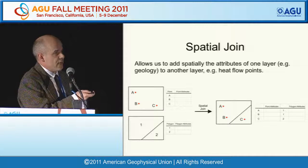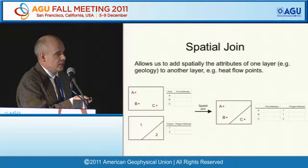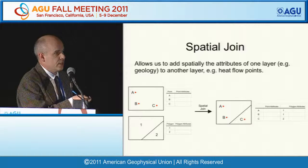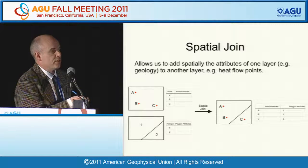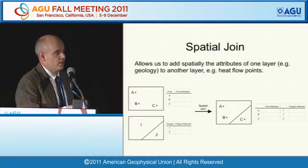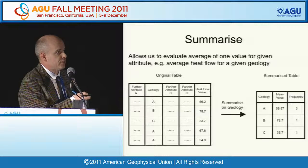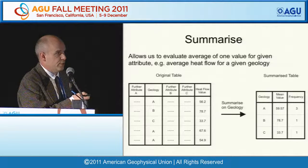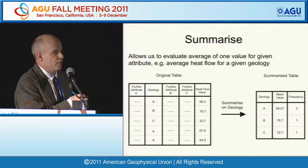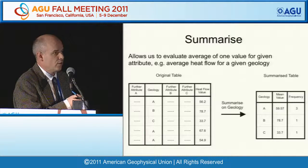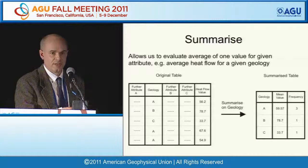To join the two datasets, we have a heat flow dataset with locations and a geology dataset. Using a GIS spatial join, we combine the heat flow data and add the geology to the attribute table. This gives us a table of heat flow values together with geology. We then use a 'summarise' process—first averaging inside each polygon for all polygons with their geology, then summing over all polygons of that specific geology to work out the mean heat flow, and also calculating the standard deviation for errors.